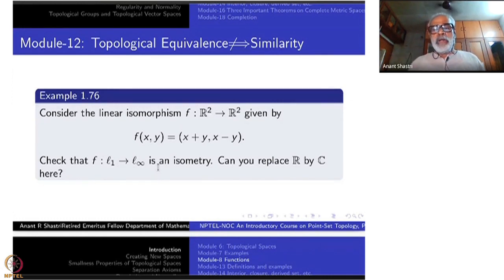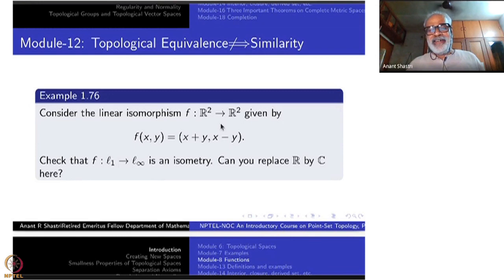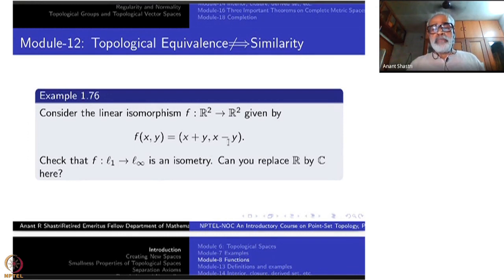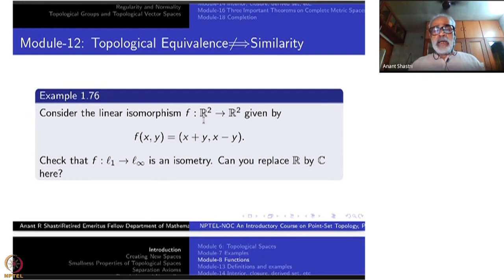All that you have to do is, inside R², rotate by 45 degrees. If you do not like that, you can say: take the map (x, y) going to (x+y, x−y), which is a linear isomorphism. What I want to say is that it is an isometry — namely you take the L1 norm on one side and the L∞ norm on the other side. If you take the same norm, this is not an isometry.